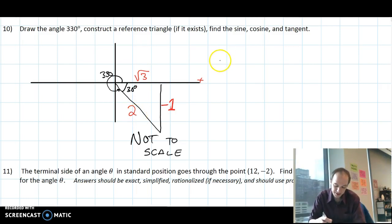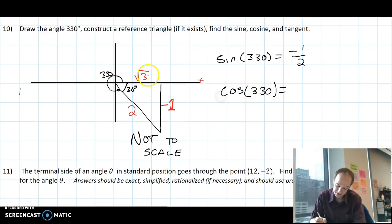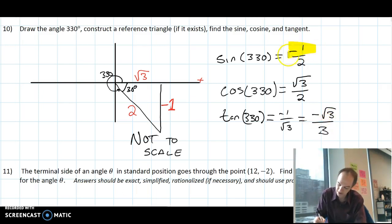Pay attention to the notation as I write my answers. I'm going to write sine of 330, not 30, because that would be up here, but 330, which is down here, equals opposite over hypotenuse, negative 1 half. Cosine of 330 is adjacent over hypotenuse, root 3 over 2. And tangent of 330 is opposite over adjacent, negative 1 over the square root of 3, which rationalizes to negative square root of 3 over 3. Three answers based on that reference triangle. Again, you don't have to make your picture perfectly to scale, but do get your labels correct and do include all negatives when you're outside of the first quadrant. Unless you're in the first quadrant, there's got to be a negative somewhere.